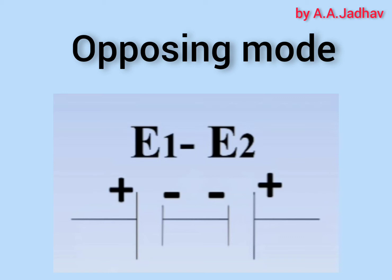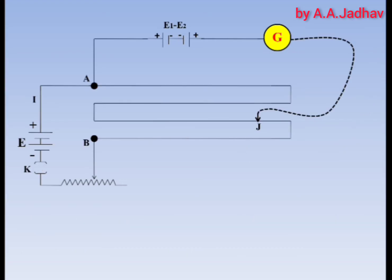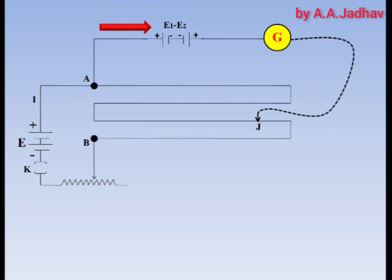Now we will discuss opposing mode, which is used in the difference method. In opposing mode, the cells are connected to each other in such a way that the total EMF becomes E1 minus E2, as shown in the figure. This is the circuit diagram for comparison of EMF of two cells by difference method, with the combination in opposing mode connected in the circuit. By closing key K, current I flows through the circuit driven by cell E.